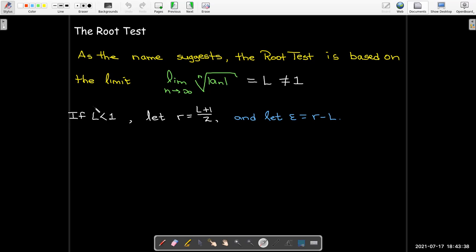So the analysis for this is similar to what we saw with the ratio test. If the limit value is less than one, we're going to let r be l plus one over two. So r is halfway between one and l, so r is still less than one but it's bigger than l.